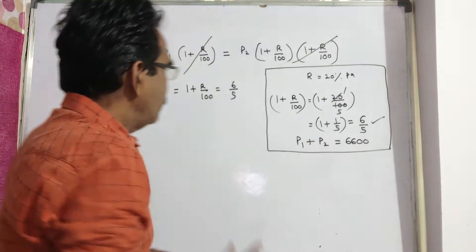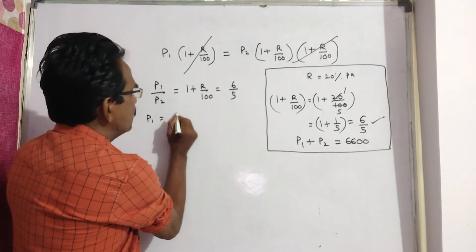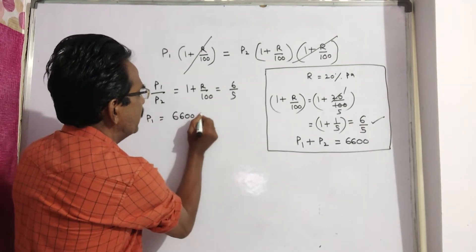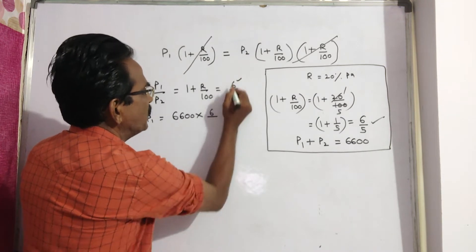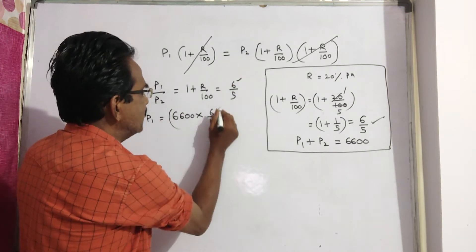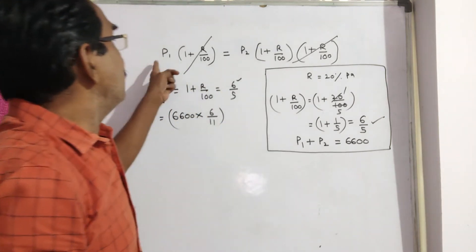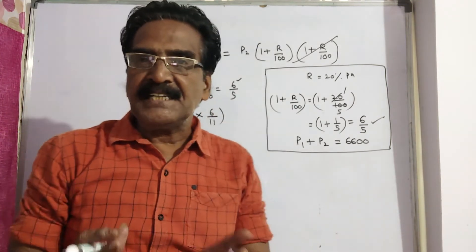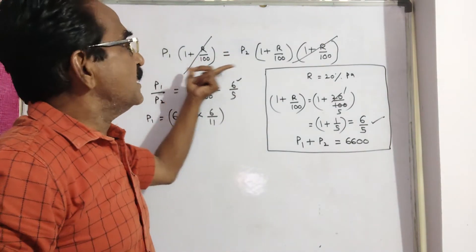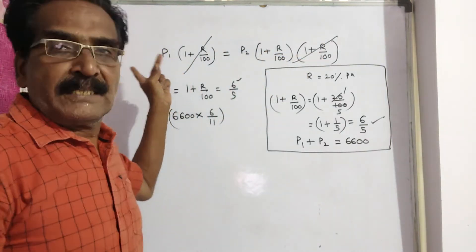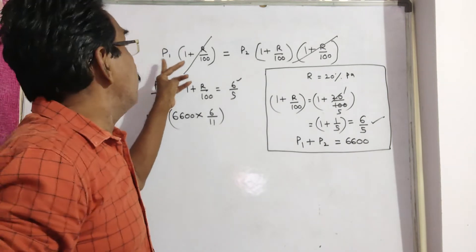P1 is equal to 6600 multiplied by 6 divided by 6 plus 5, which is 11. This gives us P1. The installment value is P1 into 1 plus R by 100.